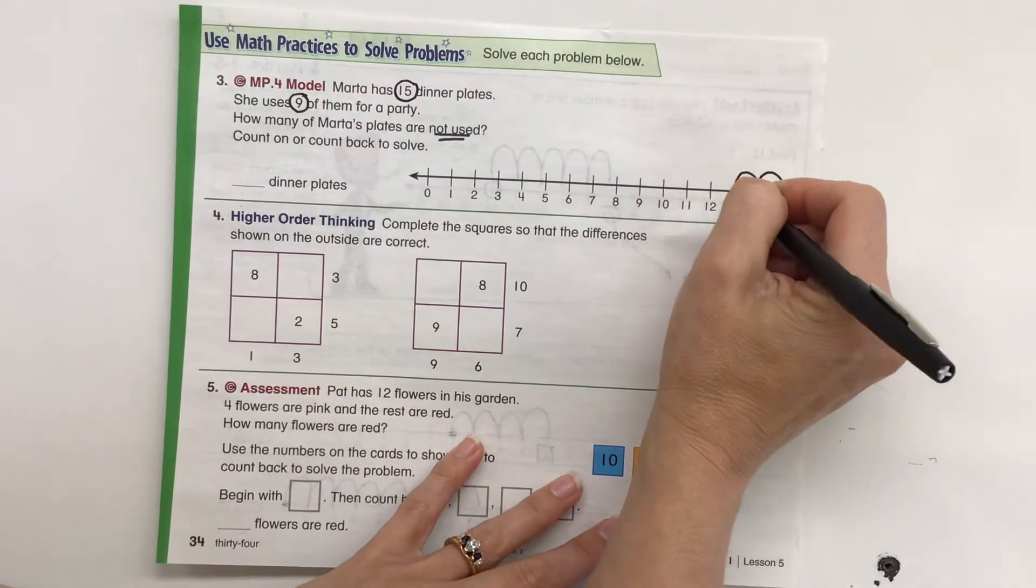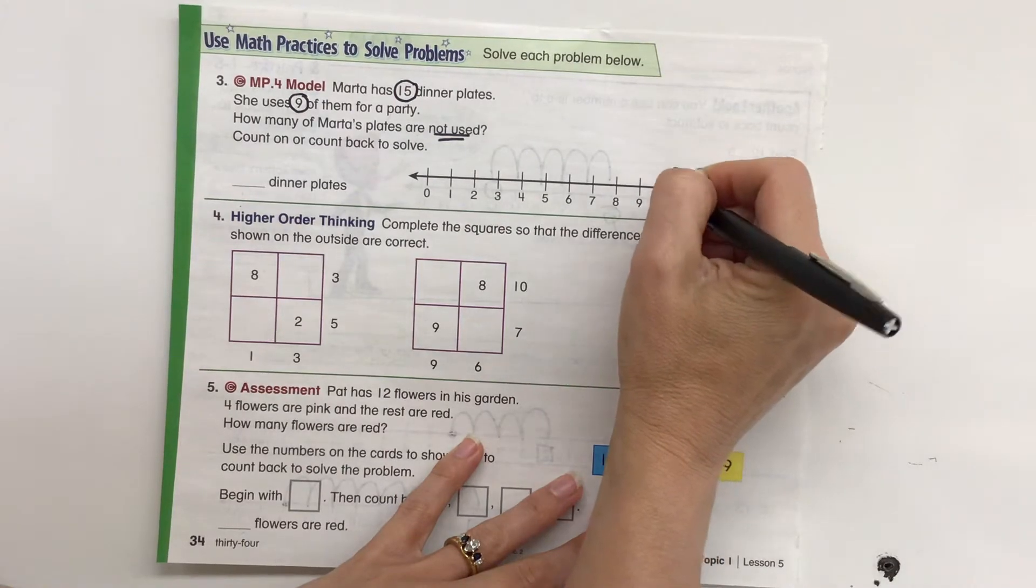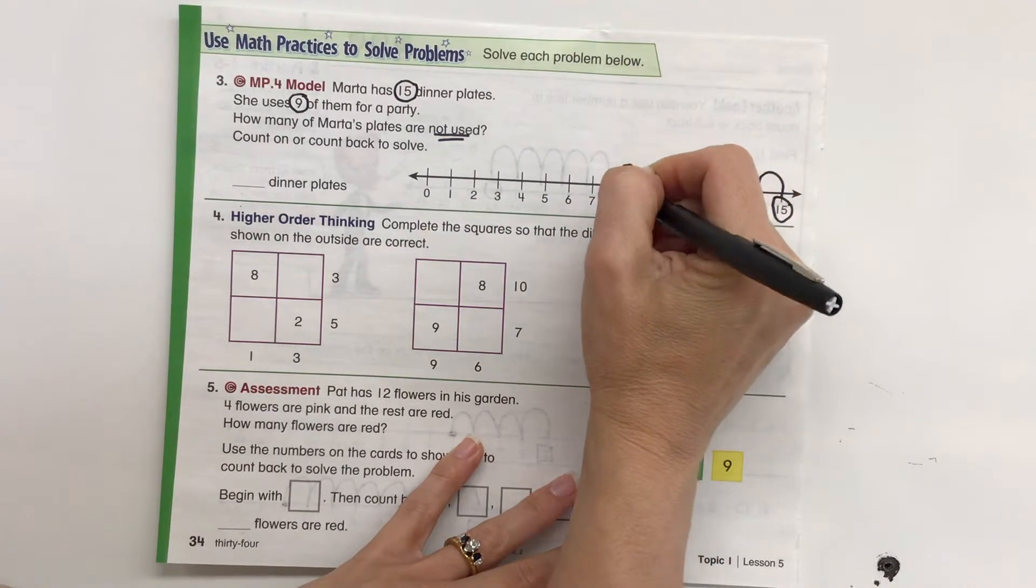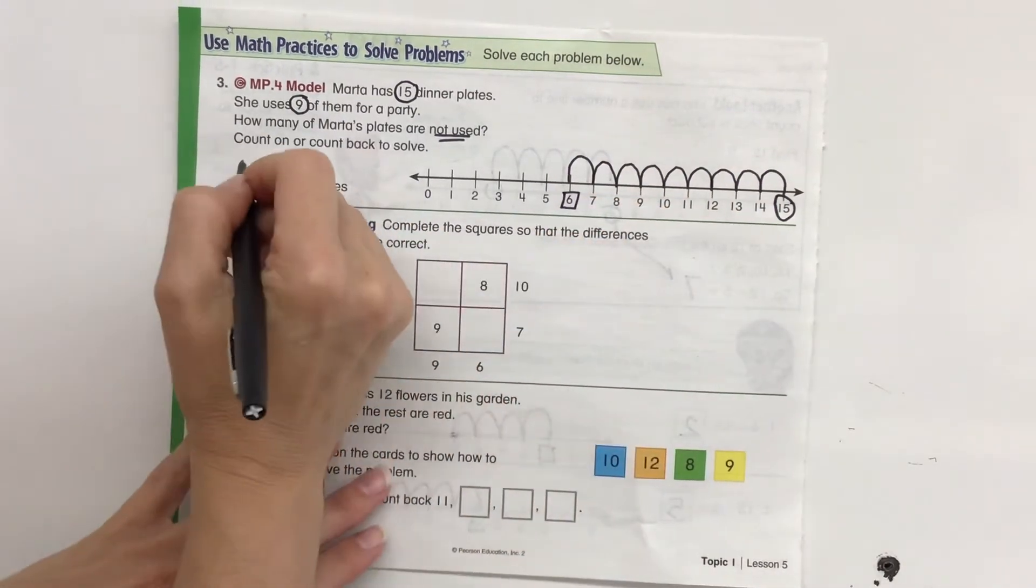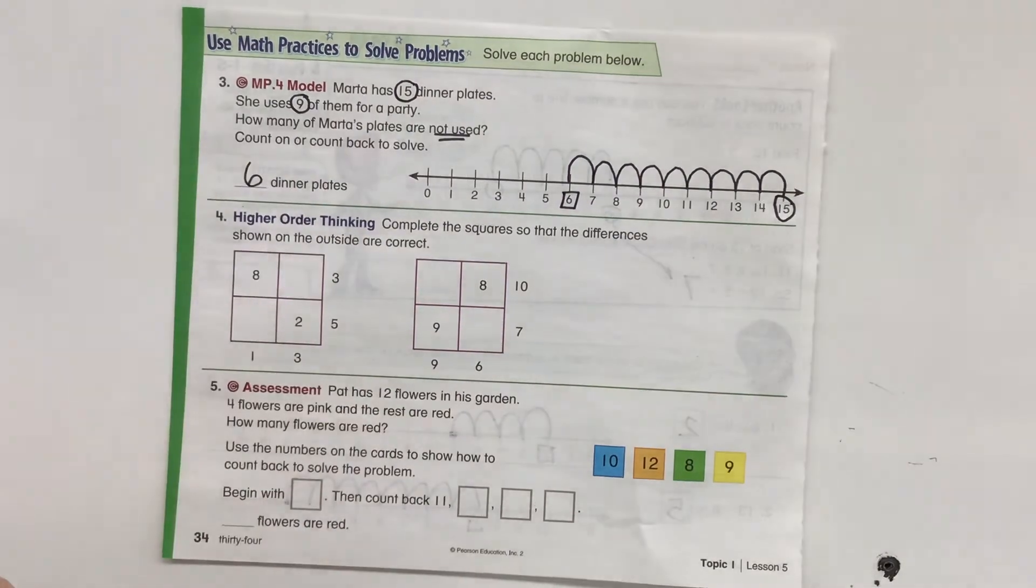1, 2, 3, 4, 5, 6, 7, 8, 9. So I end up at 6. So there are 6 dinner plates that she did not use.